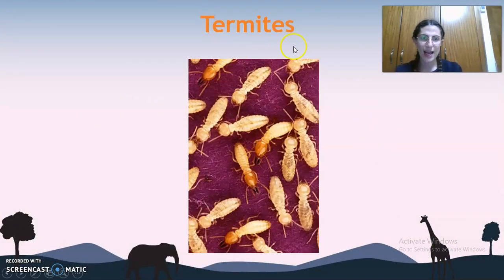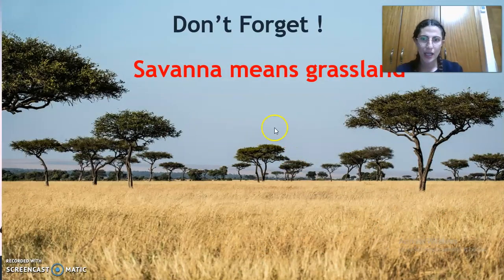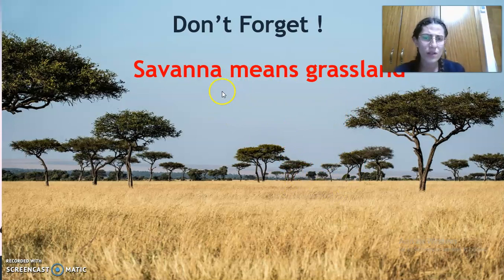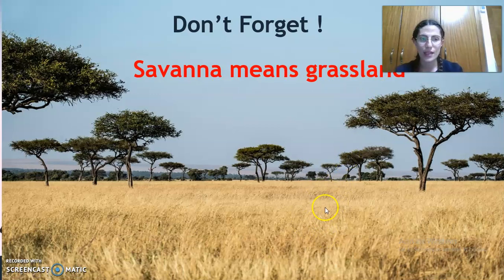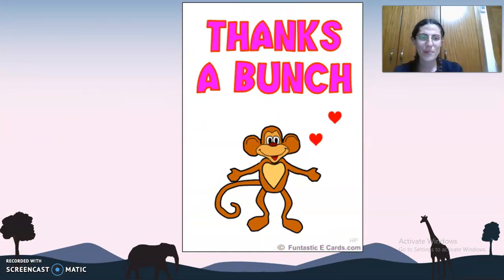As we can see in this picture, we can check out the termites — the insects that the pangolin eats. Also, don't forget that the word savanna means grassland — a land with really tall grass. Thanks a bunch!